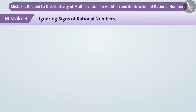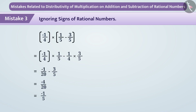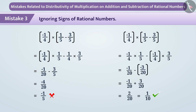Mistake 3: Ignoring signs of rational numbers. Some children do not pay attention to signs when using distribution of multiplication over subtraction. For example, if asked for the result of −1/4 × (1/5 − 3/5), some children solve it incorrectly by not distributing the negative sign. The correct solution requires careful attention to signs. It is important to pay attention to signs when using distributivity.